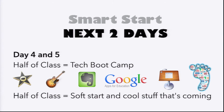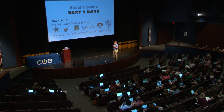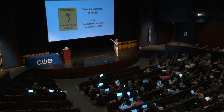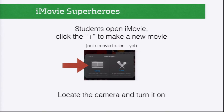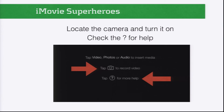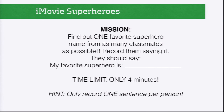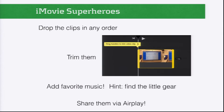The next two days we did tech training. How many of you heard a teacher say, 'I'd love to use blank but I haven't been trained yet'? What we did was make a bunch of little things called app mixers. Have all the kids open up iMovie — they will figure out how to turn the camera on for you. You don't need training. If they don't know what to do, have them ask a neighbor. Every kid does this: they have four minutes to ask as many kids as they can. The key sentence is 'my favorite superhero is.' Drop the clips in any order, trim them, add favorite music — your whole district is now framed in iPad iMovie production.